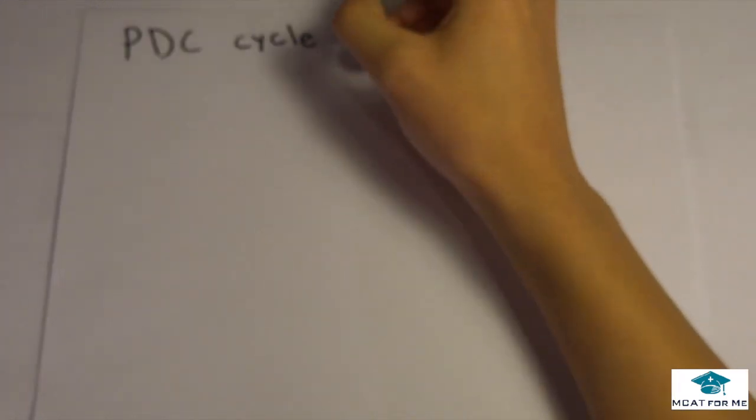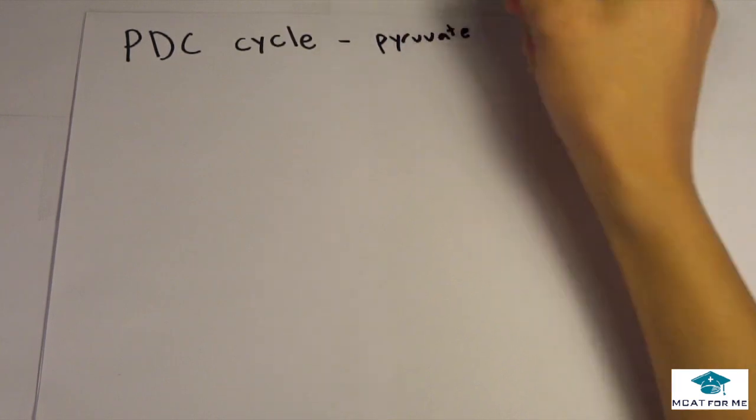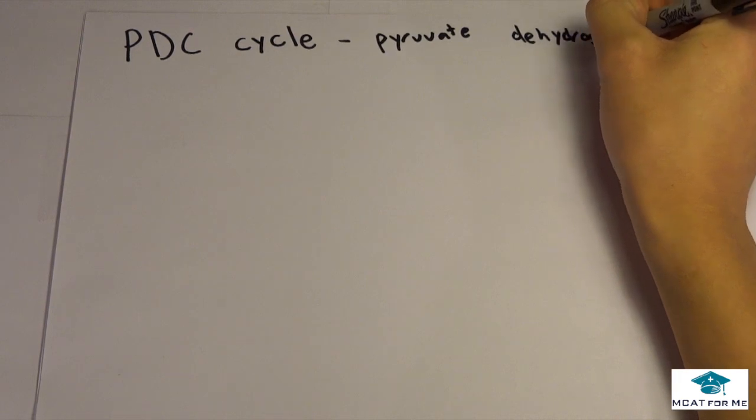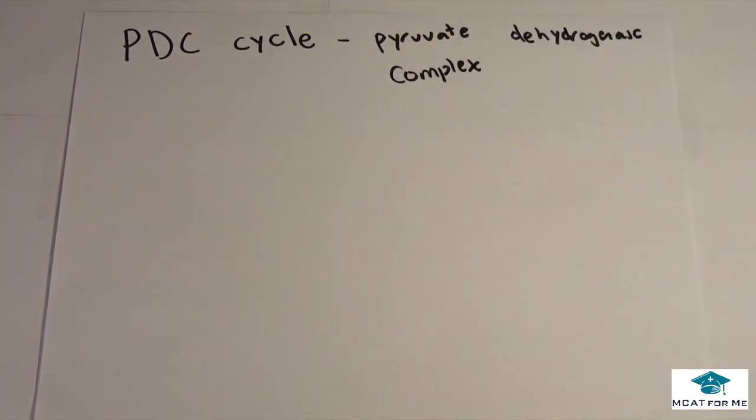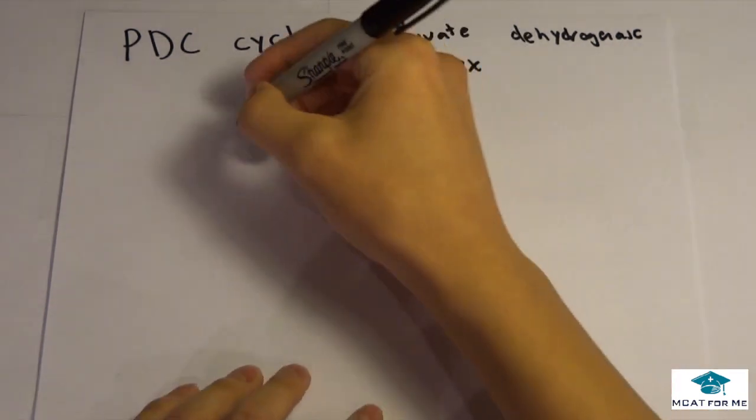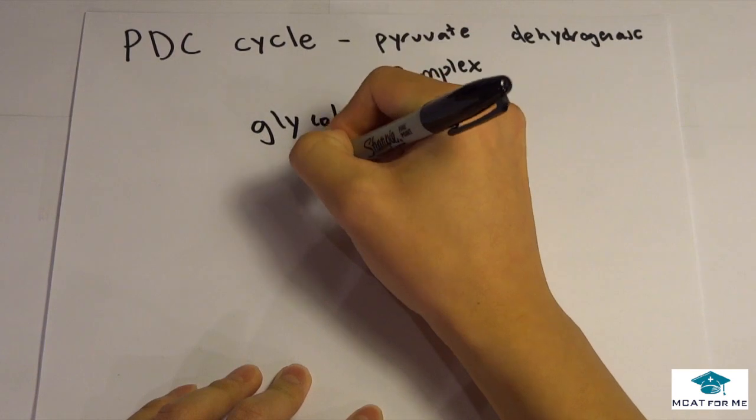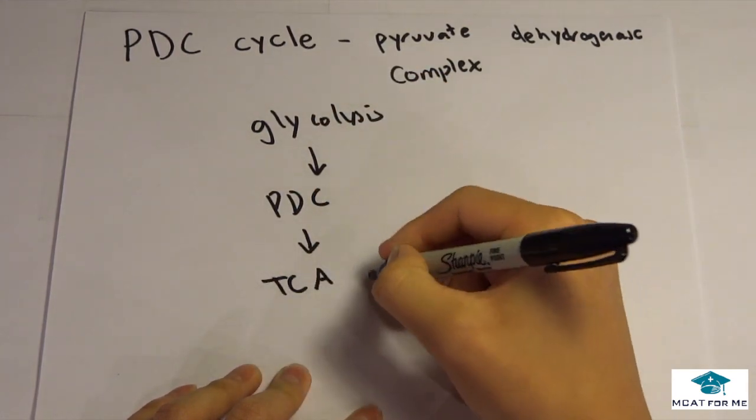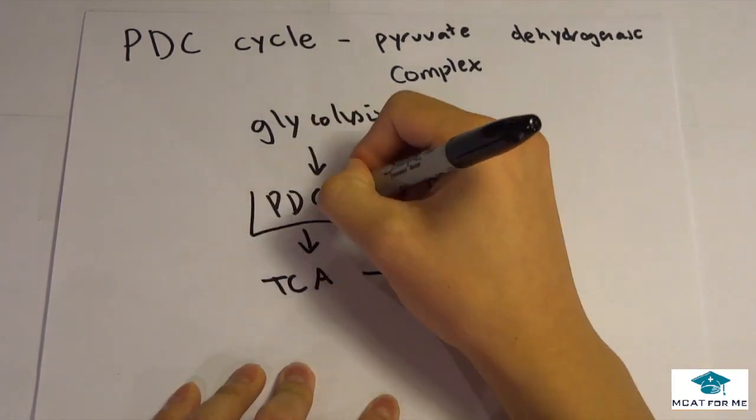Today we're going to be talking about the PDC cycle. What is the PDC cycle? It's the pyruvate dehydrogenase cycle or dehydrogenase complex actually. And so what this is is the intermediate between glycolysis and the TCA cycle. So we have glycolysis first and then we have the PDC and then we have the TCA and after TCA we have the electron transfer chain.